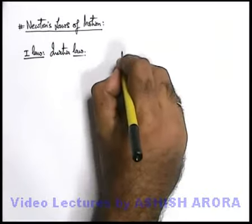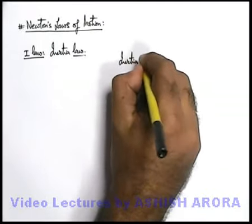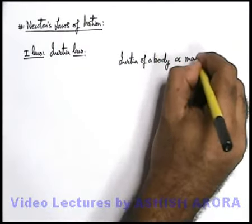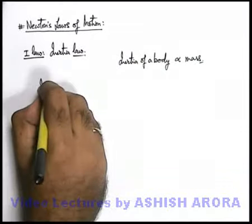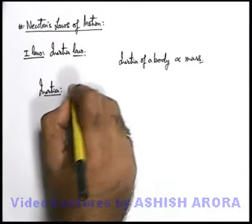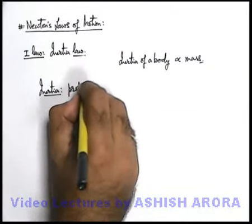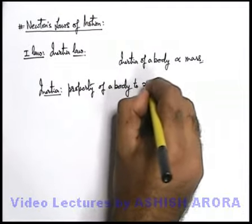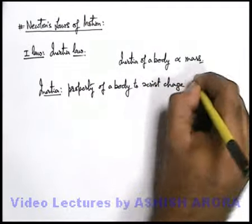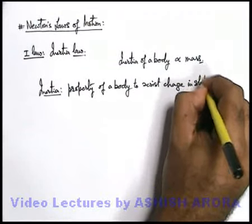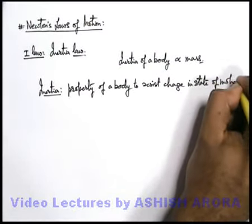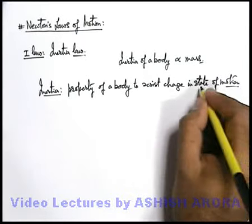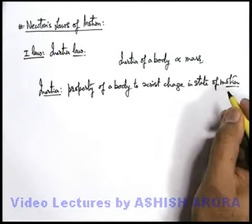If we talk about inertia of a body, inertia of a body is directly proportional to the mass of the body. Inertia can be simply defined as the property of a body to resist change in its state of motion. As we have already studied, state of motion is simply defined as the velocity vector. So if we want to change the velocity vector, we need to apply a force.